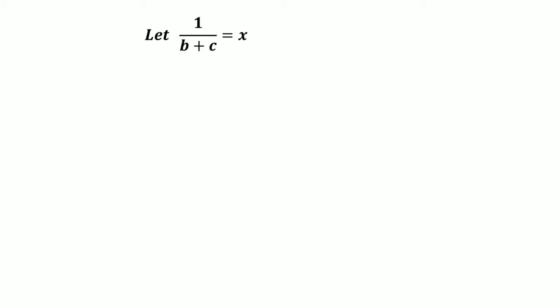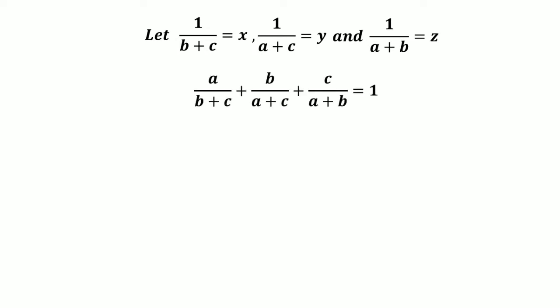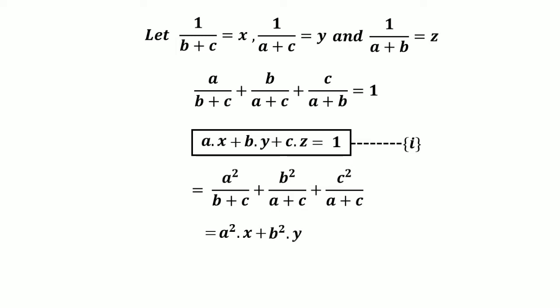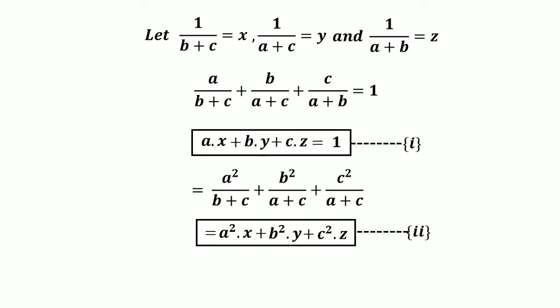To avoid confusion, we assign some variables. Let x equal 1 divided by the quantity (b plus c), let y equal 1 divided by the quantity (a plus c), and let z equal 1 divided by the quantity (a plus b). Substituting these into the given equation, we get a times x plus b times y plus c times z equals 1 — call this equation one. For equation two, we need to find a squared times x plus b squared times y plus c squared times z.